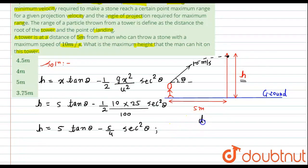For maximum height, the condition is dh by d theta should be equals to 0. If we differentiate it, dh by d theta becomes equals to 5. Derivative of tan theta is sec² theta minus 5/4. Derivative of sec² theta will be 2 sec theta into derivative of sec theta will be nothing but sec theta into tan theta. And to maximize it, this should be equals to 0.